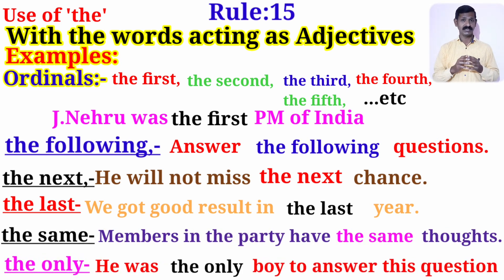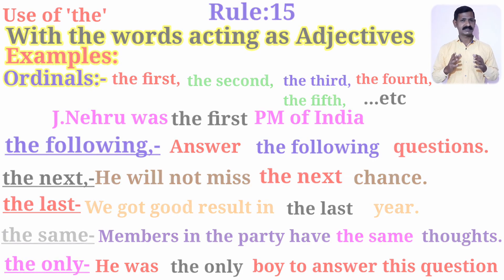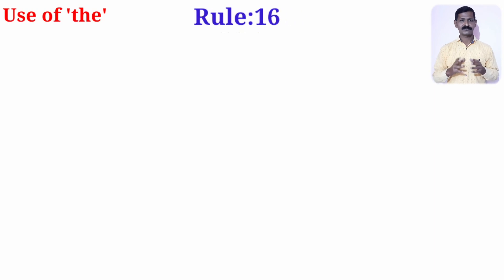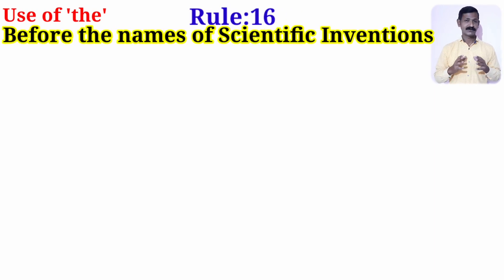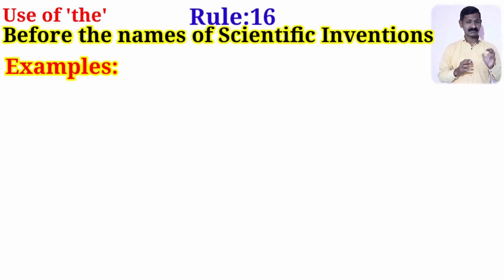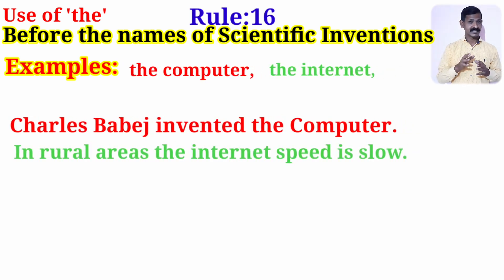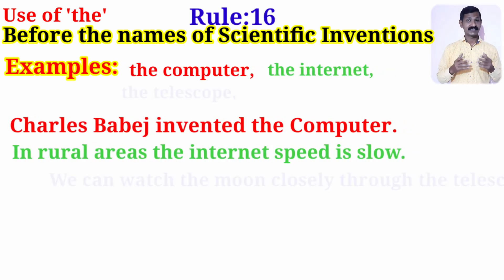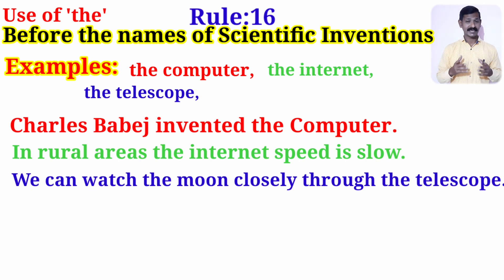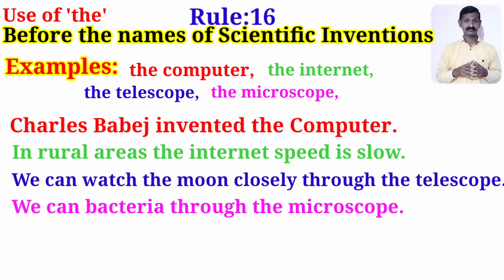We use article 'the' before the names of scientific inventions — for example: the computer, the internet, the telescope, the microscope, and so on. Example sentences showing how they are used are also provided.